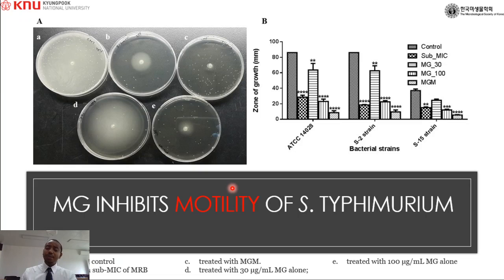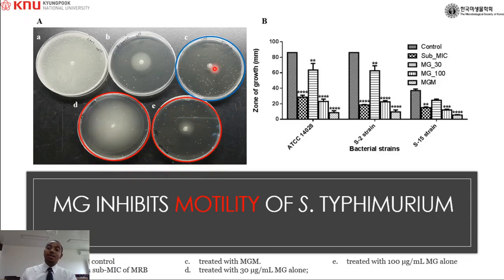Furthermore, methyl gallate showed inhibition of Salmonella motility. The sub-MIC concentration of marbofloxacin alone also had some effect on inhibiting motility, but when combined with methyl gallate the effect was significantly higher — almost completely inhibiting the motility of Salmonella Typhimurium. Methyl gallate at 30 µg/mL and 100 µg/mL showed dose-dependent inhibition across all strains tested.